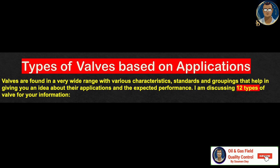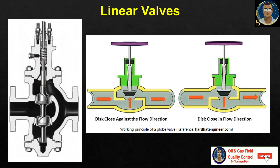Types of valve based on application. Valves are found in a very wide range with various characteristics, standards and groupings. Here are 12 types of valve. Rotary valves are also referred to as quarter turn valves, relying on the rotary motion of the flow obstructor. The rotation is typically limited to 90 degrees. Valves which are truly quarter turn close completely at 0 degrees and open completely at 90 degrees. Examples are ball valves and plug valves.